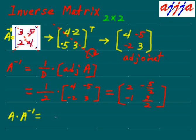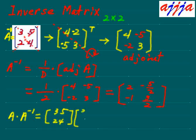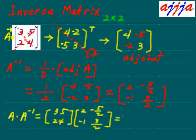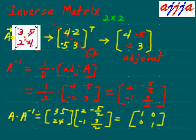To verify, matrix A times its inverse should equal the identity matrix. Matrix A is three, five, two, four — times the inverse with entries two, negative one, negative five-halves, and three-halves — should give the identity. Let's check: three times two plus five times negative one equals six minus five, which is one. For this row and column: two times two plus four times negative one equals four minus four, which is zero.